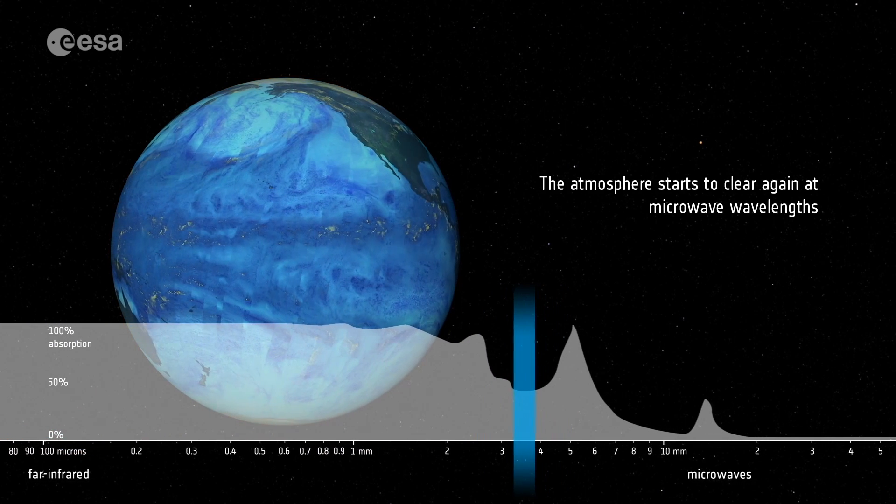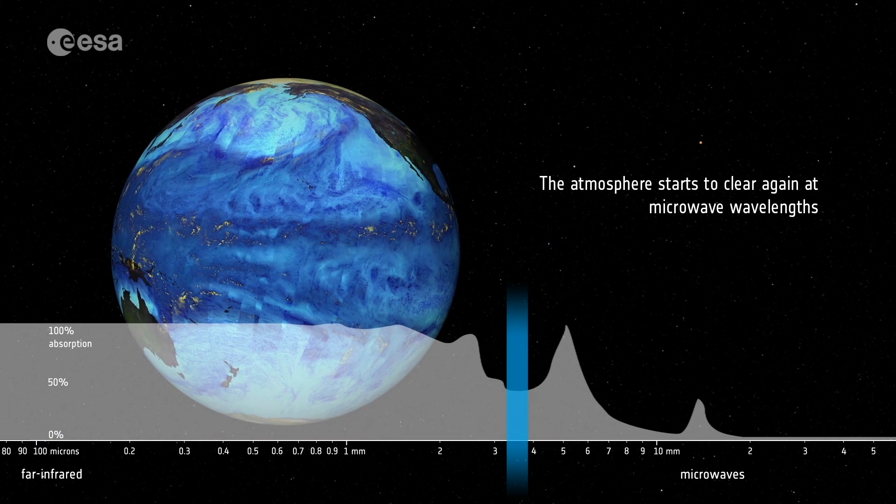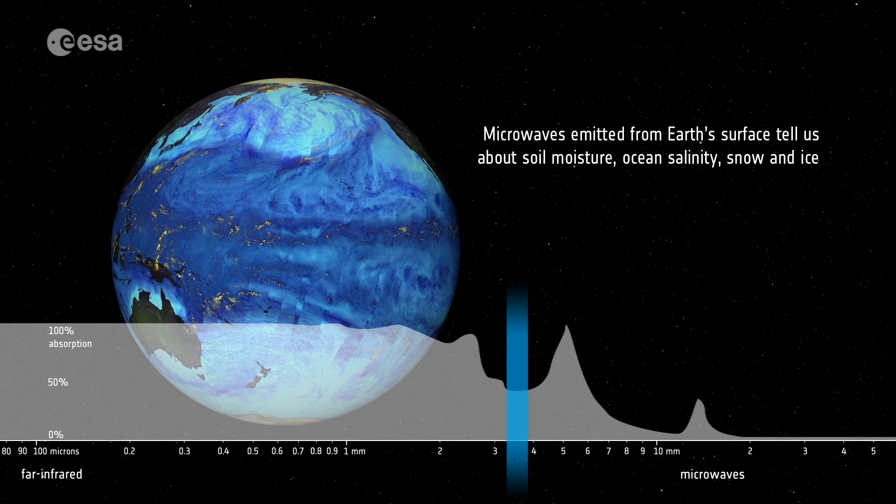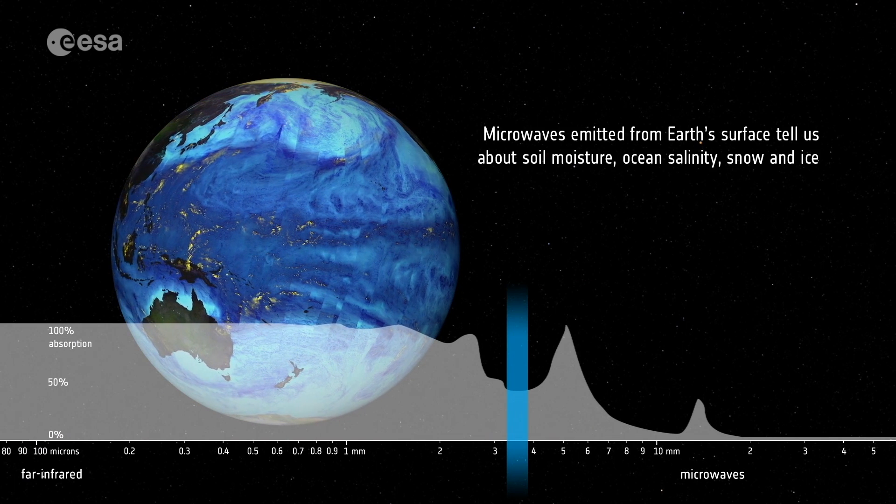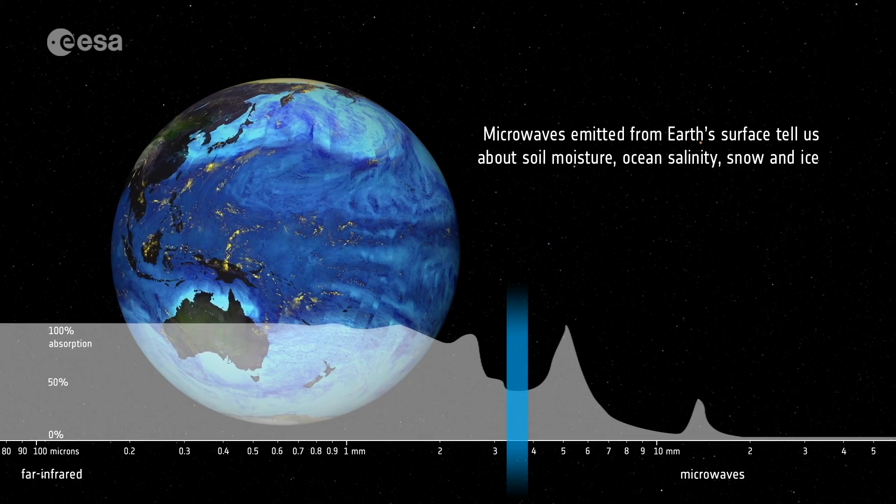The atmosphere starts to clear again at microwave wavelengths. Microwaves emitted from Earth's surface tell us about soil moisture, ocean salinity, snow and ice.